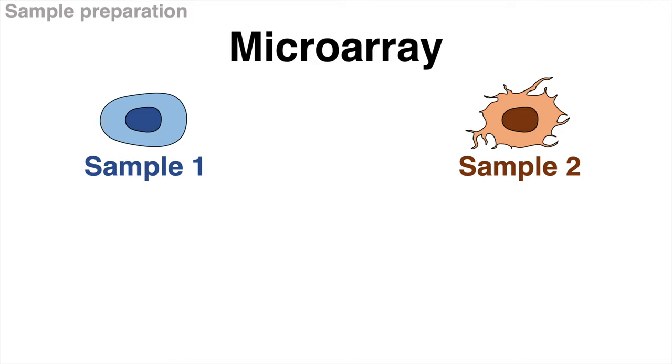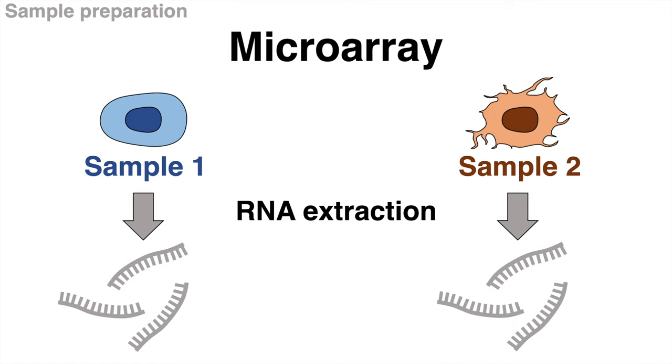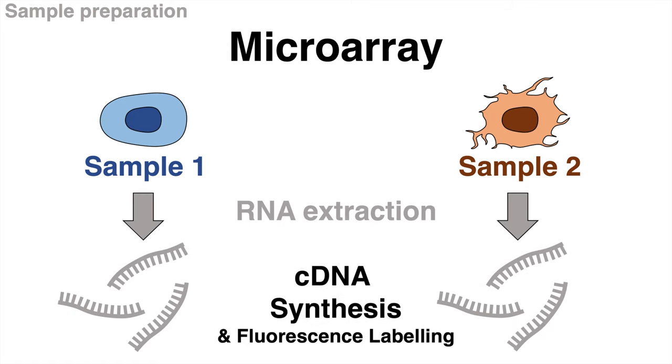The first step for microarray analysis is the sample preparation. In this example we have samples 1 and 2. Sample 1 might be tissue from a healthy cell and sample 2 could be cells from tumor tissue. The RNA is extracted from both samples and then transcribed into cDNA using reverse transcription.